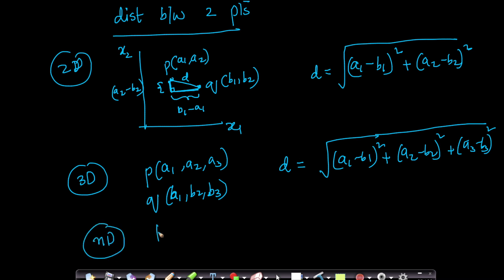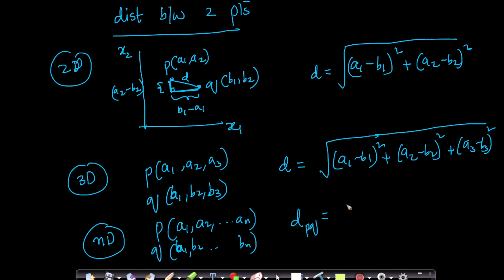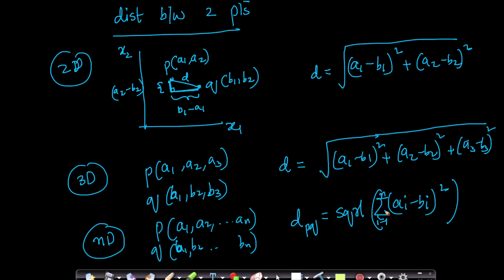Similarly, in n-dimensional space, if you have two points p = (a1, a2, ..., an) and q = (b1, b2, ..., bn), the distance between p and q can be written as the square root of the sum from i=1 to n of (ai − bi)². I have written it in a concise summation notation instead of the expanded form. Throughout linear algebra, we will learn a concept in 2D and 3D and extend it to higher-dimensional spaces.